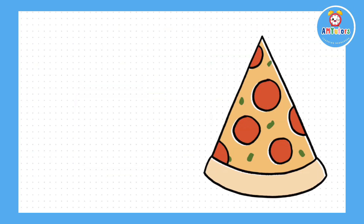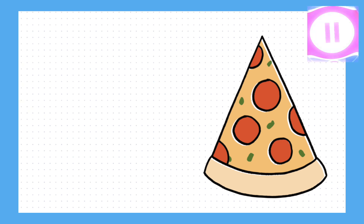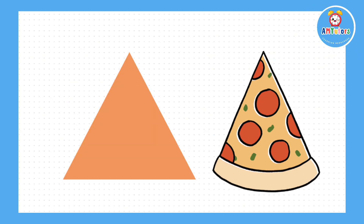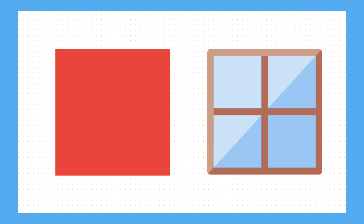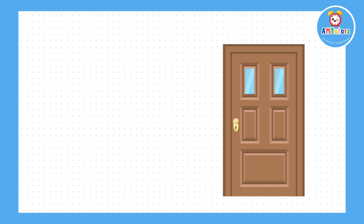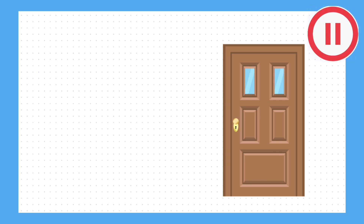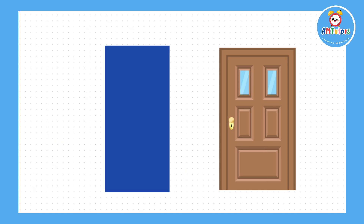The next one is a pizza slice. What shape is this? The answer is triangle. What shape is this window pane? The answer is square. What shape is this door? The answer is rectangle.